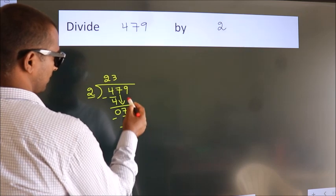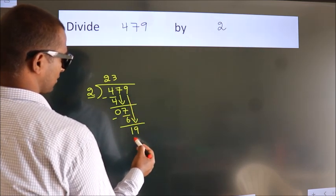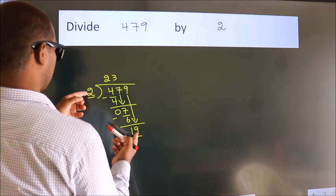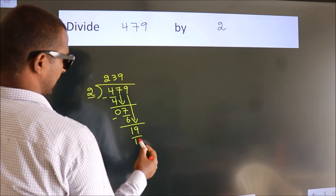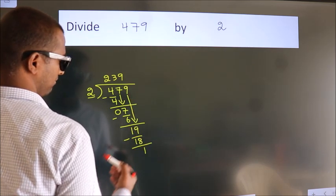After this, bring down the beside number, so 9 down. So 19. A number close to 19 in the 2 table is 2 times 9 equals 18. Now we subtract. We get 1.